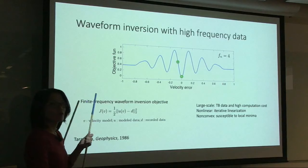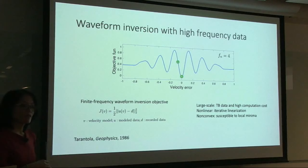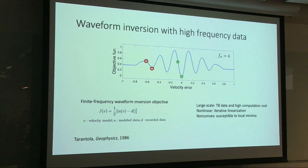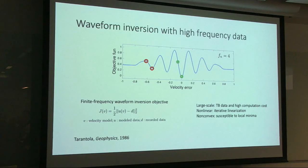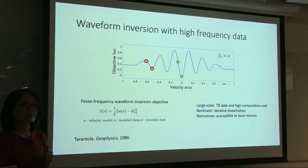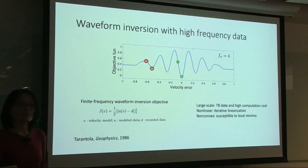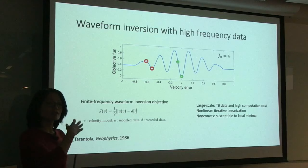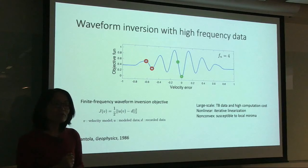All successful cases fall into the global minimum, giving a good understanding of the subsurface. However, if you start just outside the basin of attraction, gradient descent will inevitably get stuck at a local minimum. You saw many different local minima on the previous slide where the recovered model differs from the true. In the field it's very difficult to tell whether you are stuck in a local minimum because you don't know the real answer.